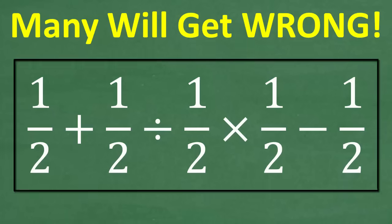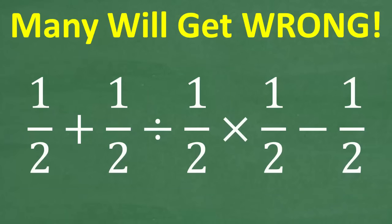1 half plus 1 half divided by 1 half times 1 half minus 1 half. Matter of fact, a lot of you might be saying, come on, Mr. U2 Math Man, this problem is too easy.